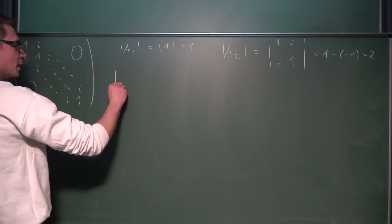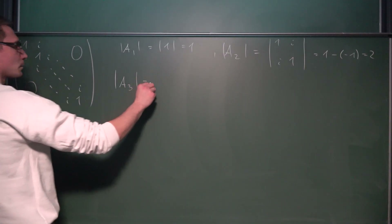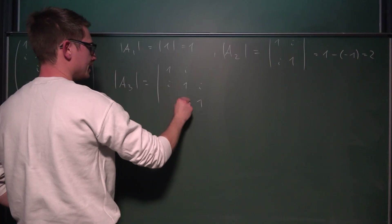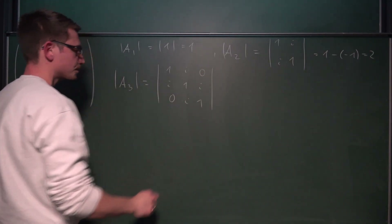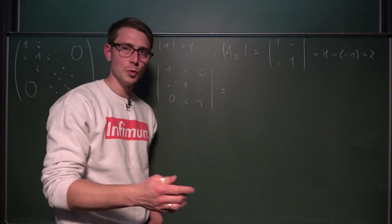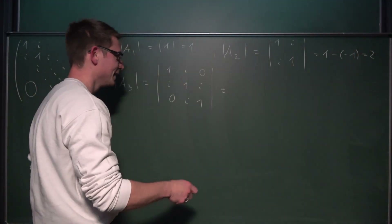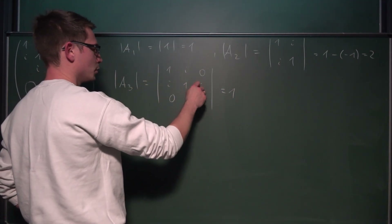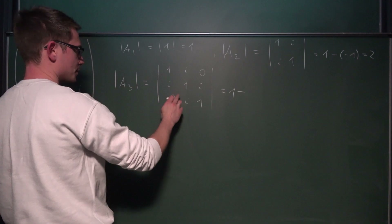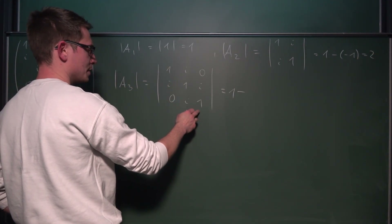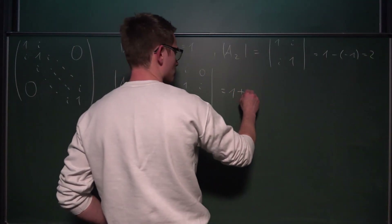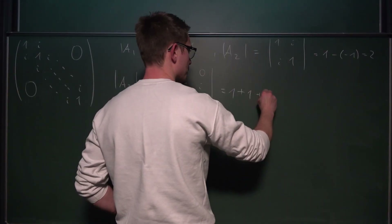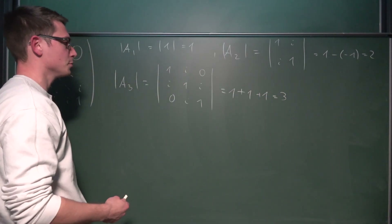Let us check the next one — the determinant of A3. The matrix has 1, 1, 1 on the main diagonal and i, i, i, i on the off-diagonals, with 0s elsewhere. By the rule of Sarrus, it's going to be 1 times 0 times 0, then minus the term with i squared — which is negative 1, so plus 1 — and then i times i times 1 is plus 1. So we get 3. So 1, 2, and 3.